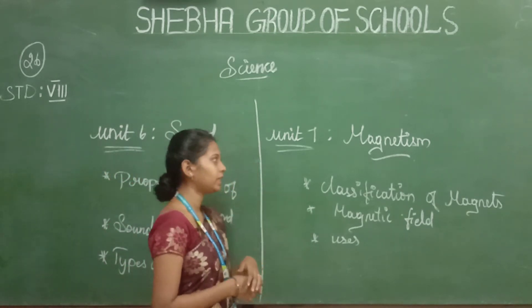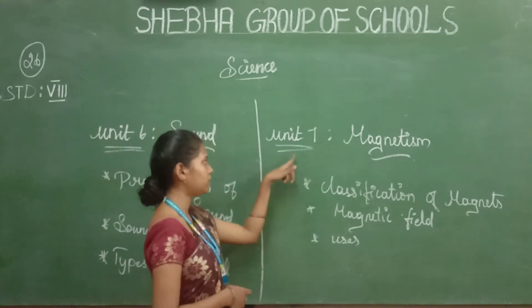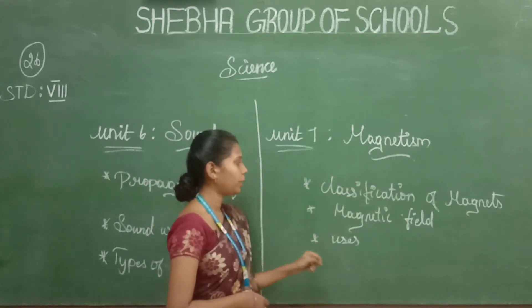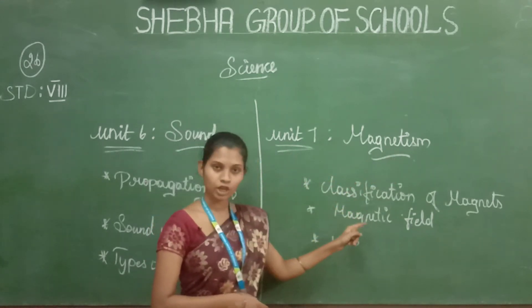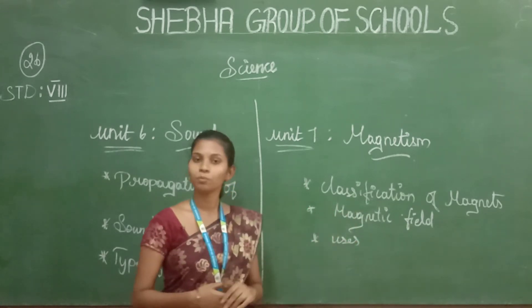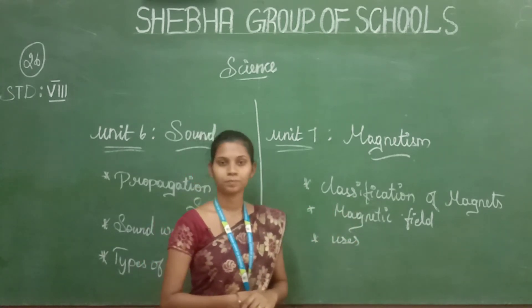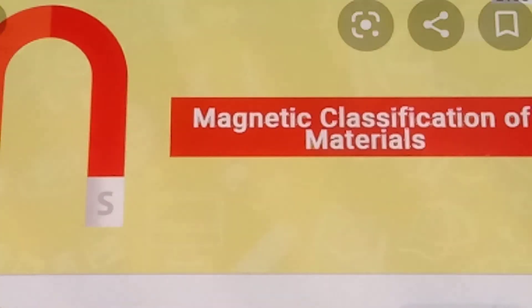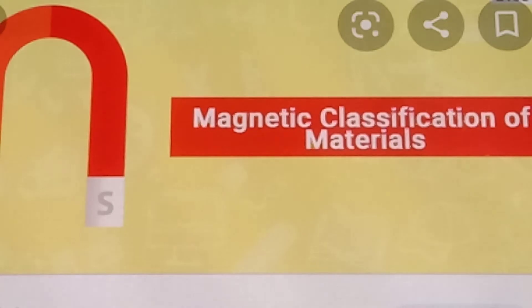Now let's move to the next lesson: Unit 7, Magnetism. The topics are classification of magnets, magnetic field, and uses of magnets. Magnets are classified into two types.